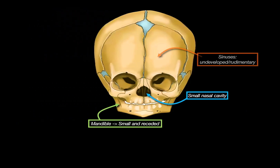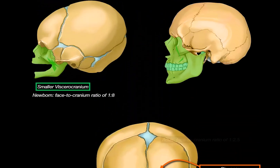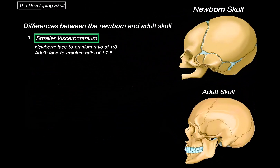Another thing is the paranasal sinuses. These are holes in your skull that resonate the voice, help filter the air you breathe, and so on. Those are either underdeveloped or rudimentary at birth. Overall, the facial bones in newborns are underdeveloped — that's the first major difference between a newborn and adult skull.